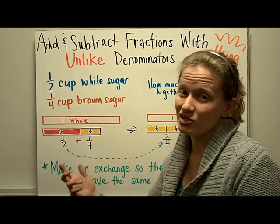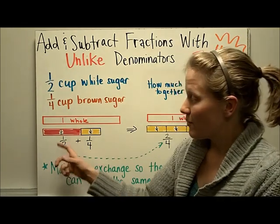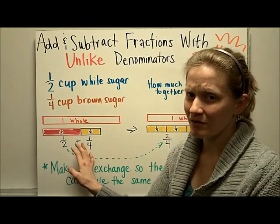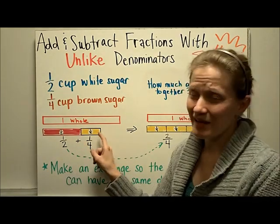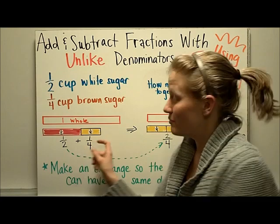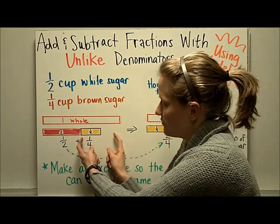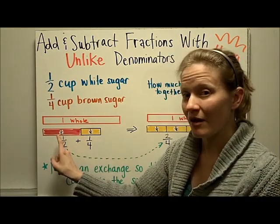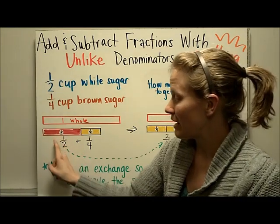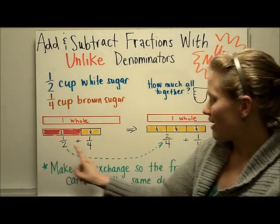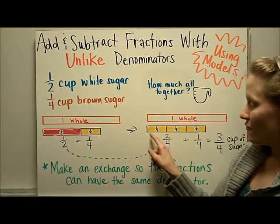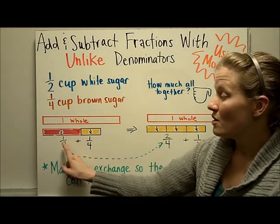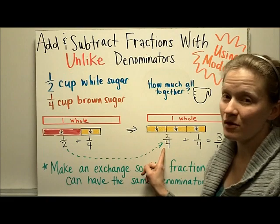So we're going to make a swap or an exchange. We're going to think about how we can change the pieces so that they're all the same color. I can't make this one pink because it's too small — the pink piece would go out too far. So I'm going to think about could I make this one yellow? And we can. We can swap this one-half piece for two yellow pieces — two-fourths — because one-half is equivalent to two-fourths.